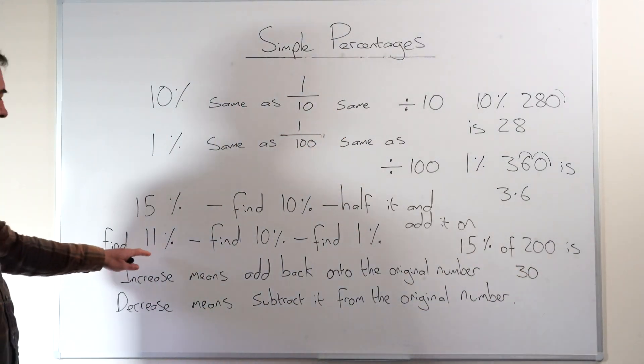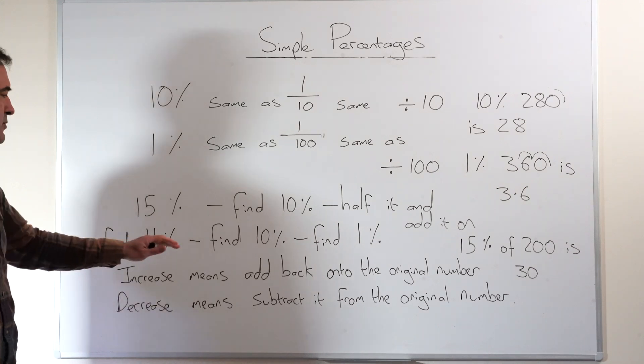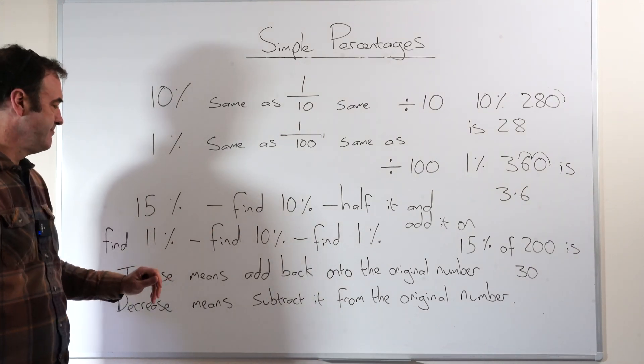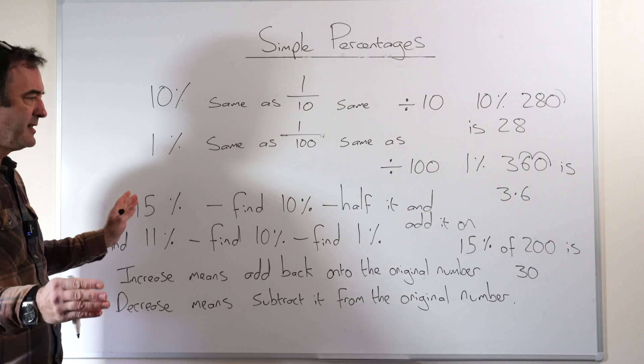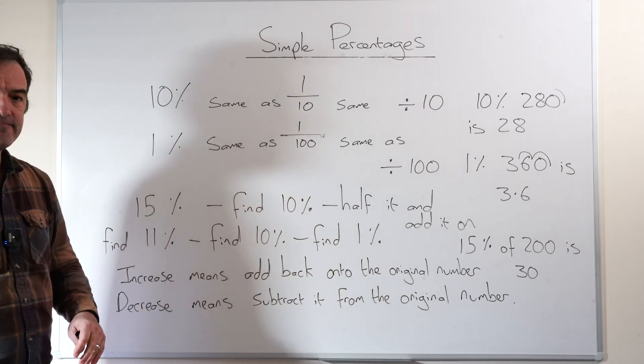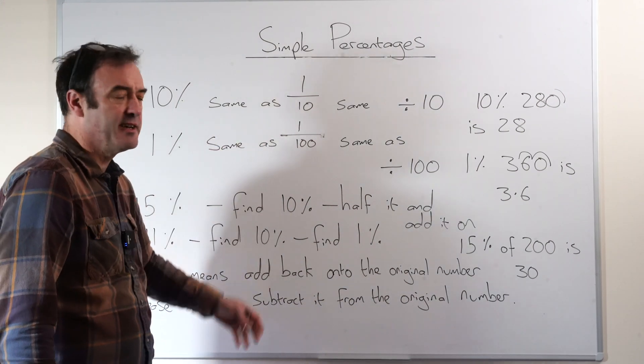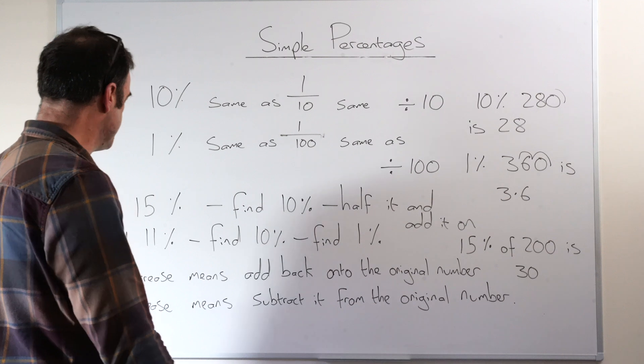If we wanted to find 11%, we could first of all divide by 10 to get 10%. Then we could divide by 100 to get 1% and put those together. Same idea. So you can see, you can actually find any percentage using this method.